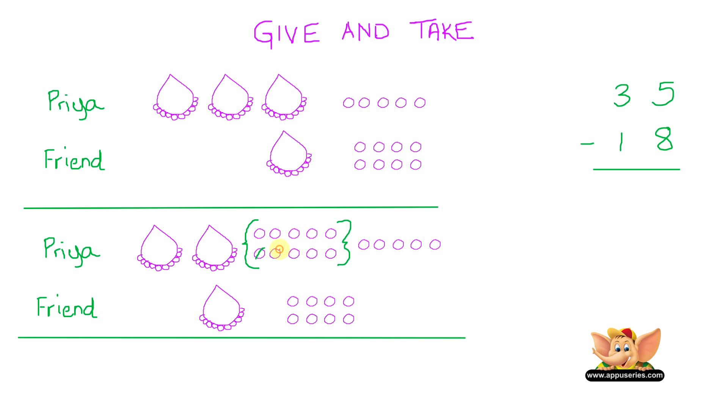1, 2, 3, 4, 5, 6, 7, 8. So these are the 8 loose pearls that Priya gave to her friend. Let's count how many loose pearls is Priya left with.